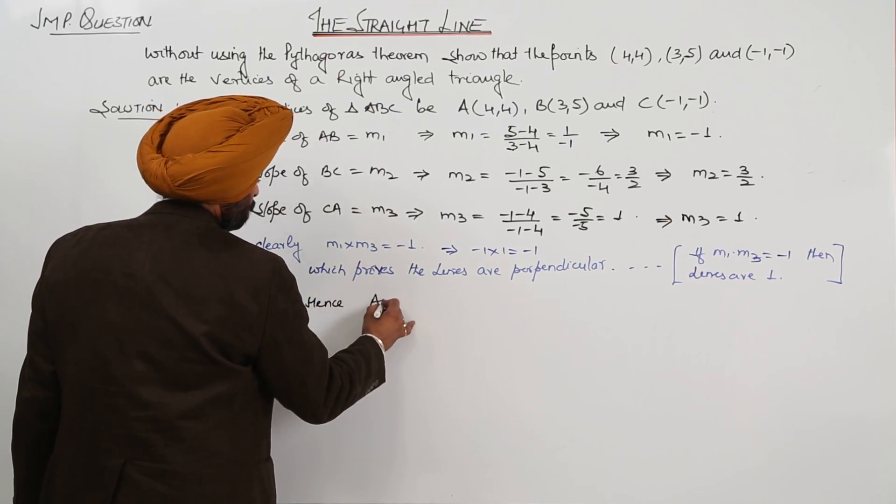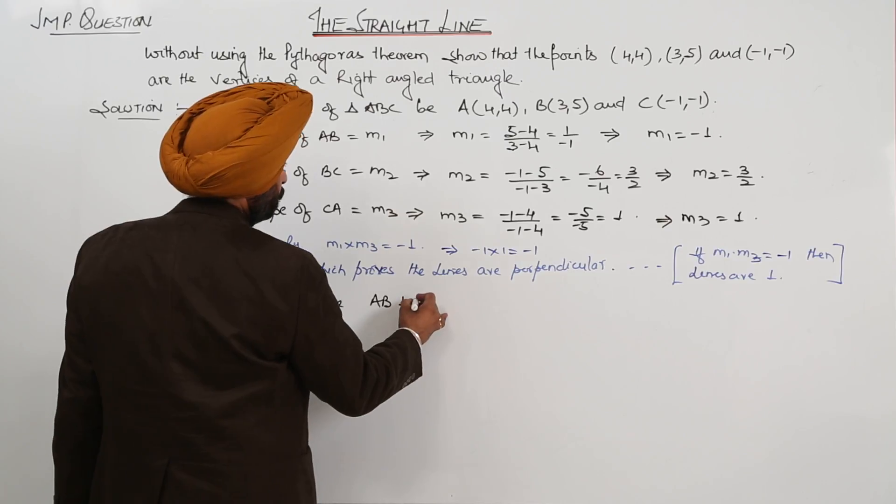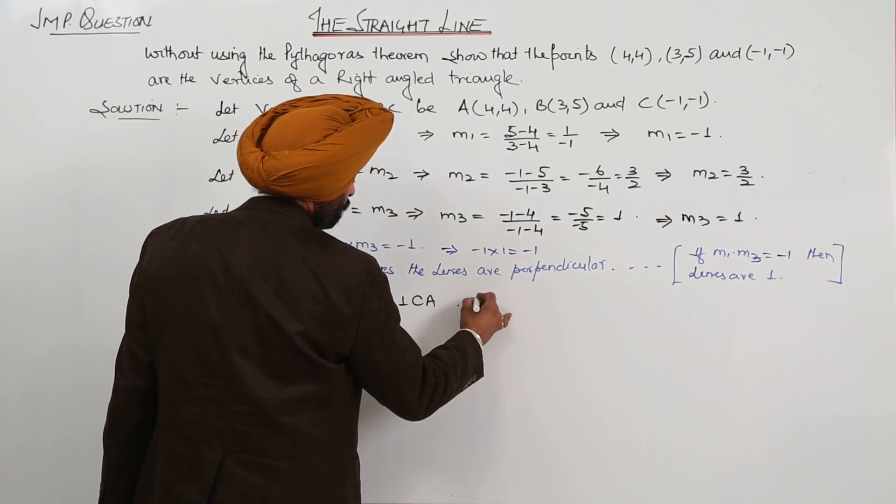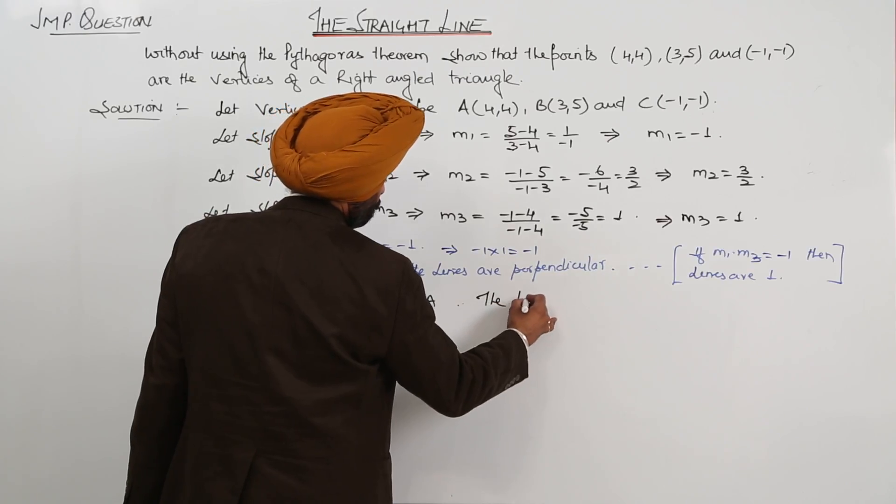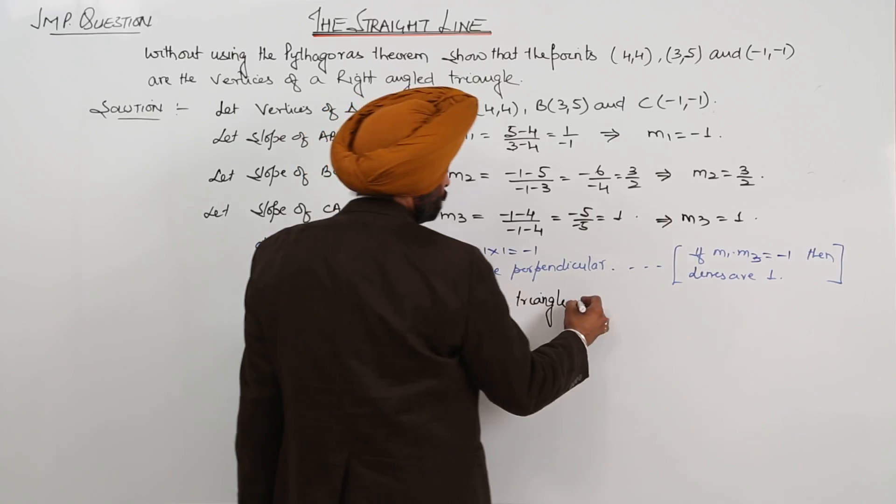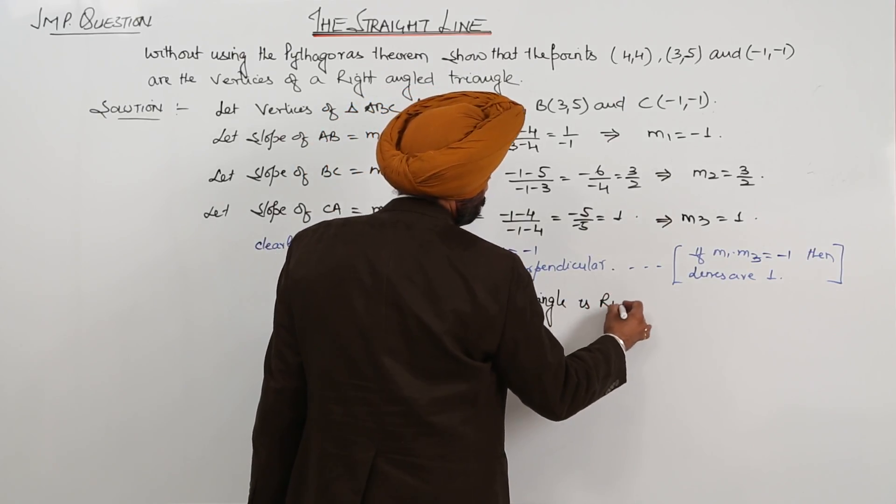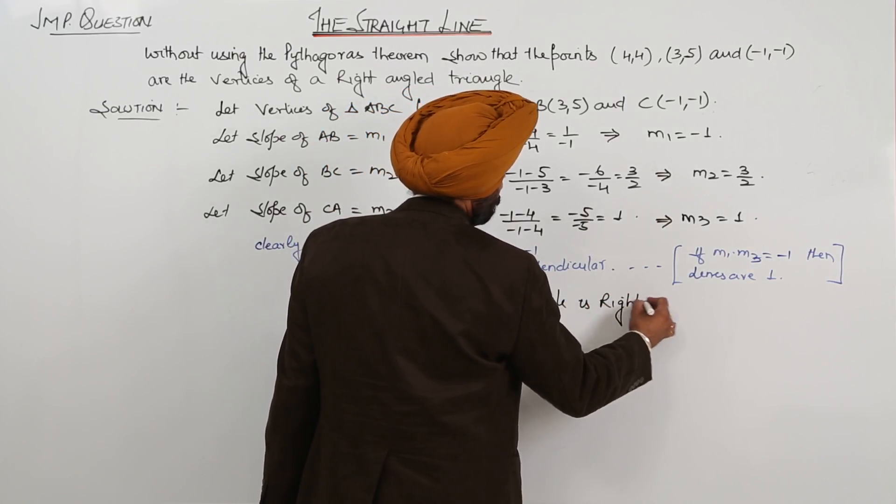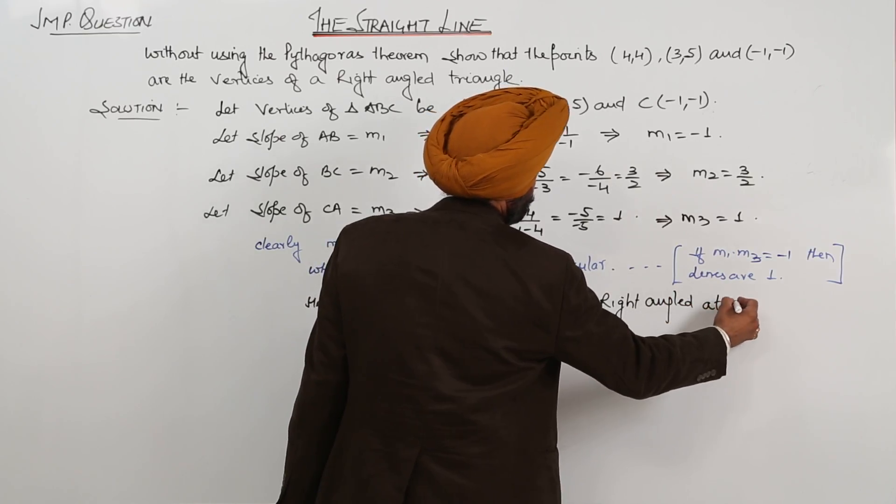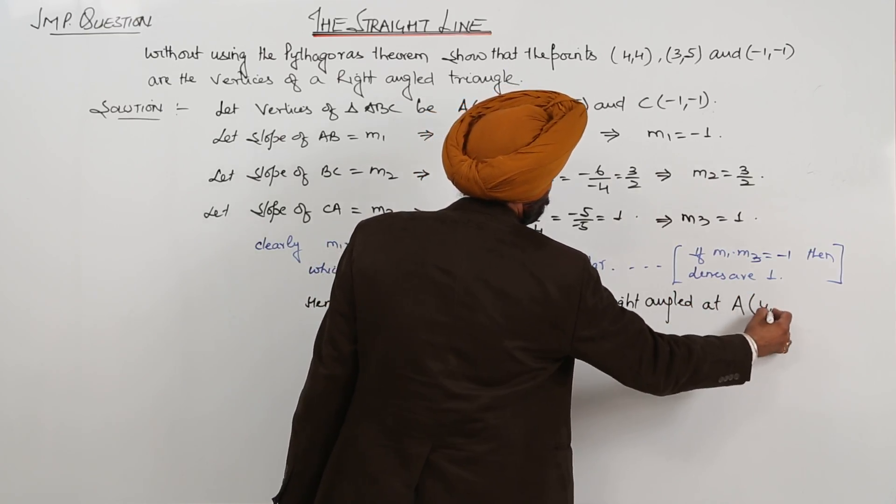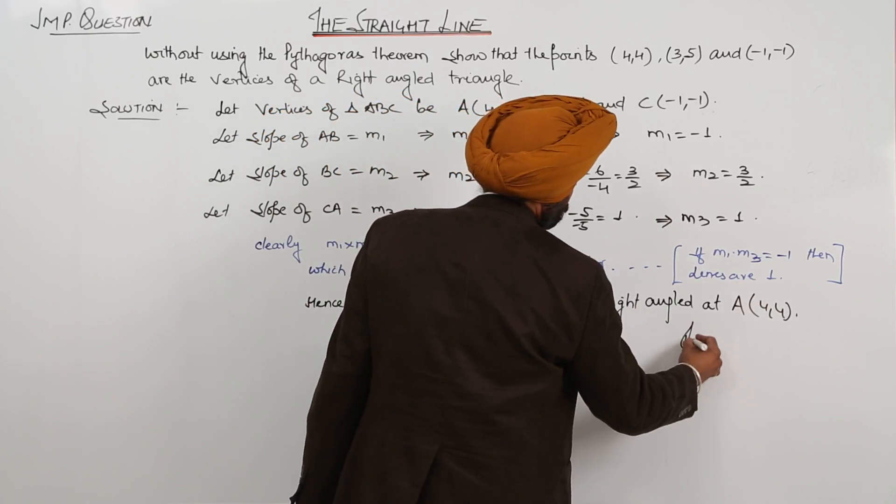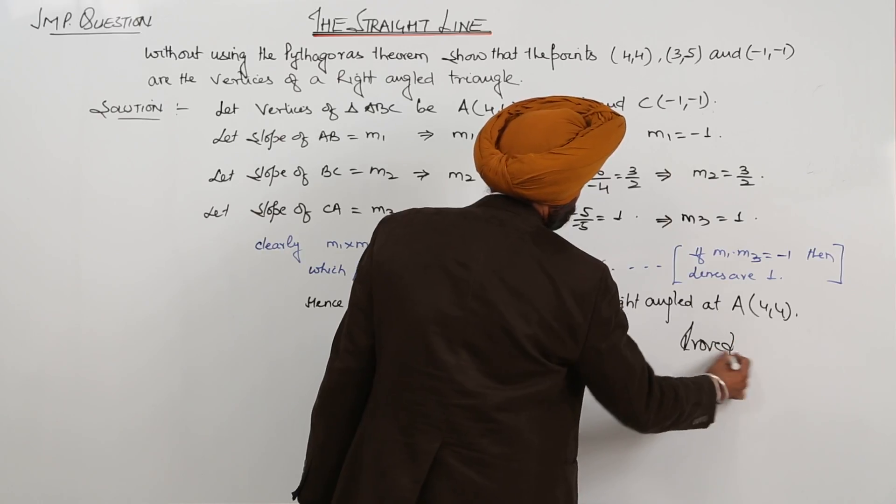Hence, AB is perpendicular to CA. The triangle is right-angled at A(4,4). Proved.